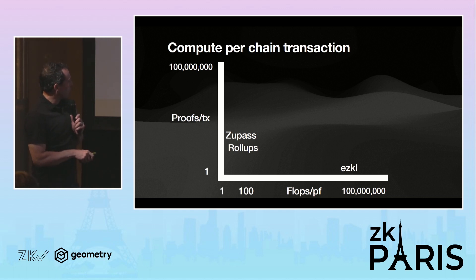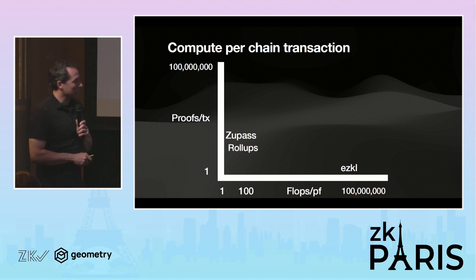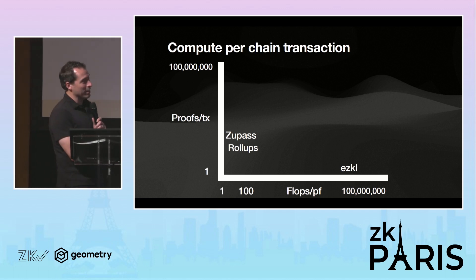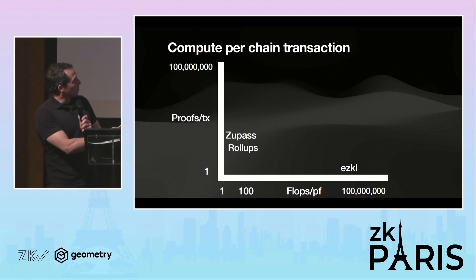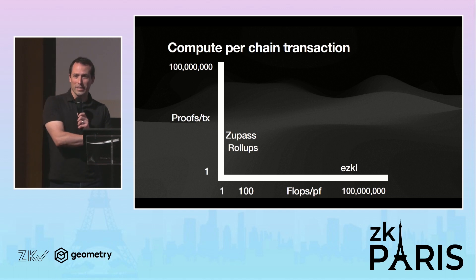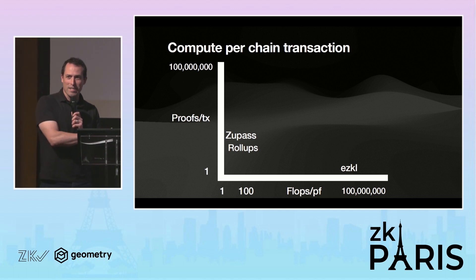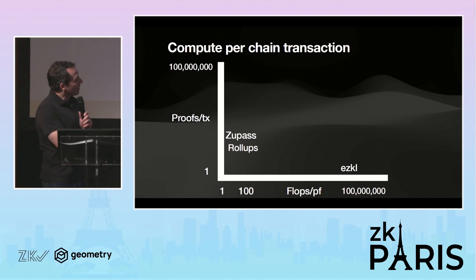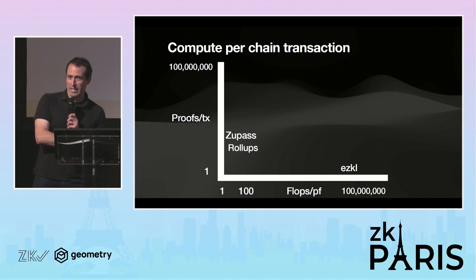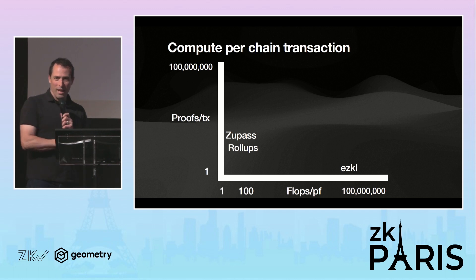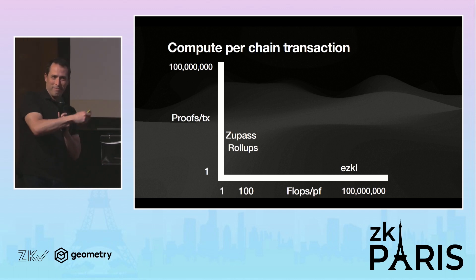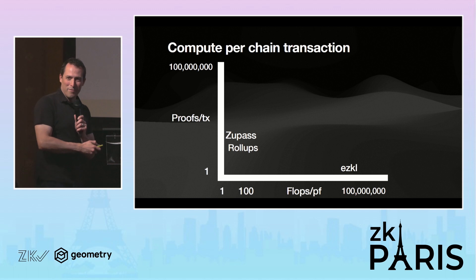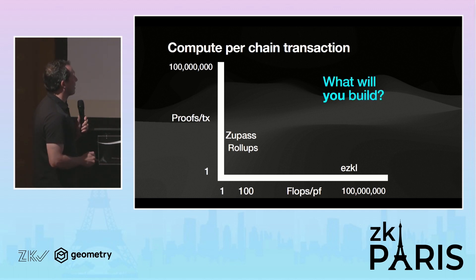On the two-axis version — flops per proof versus proofs per transaction — up at the top there's going to be really disruptive changes: changing the way our society organizes itself, changing what we mean by money. I'm not going to think of those things; I'm just going to help make it run fast enough that someone else can explode things.